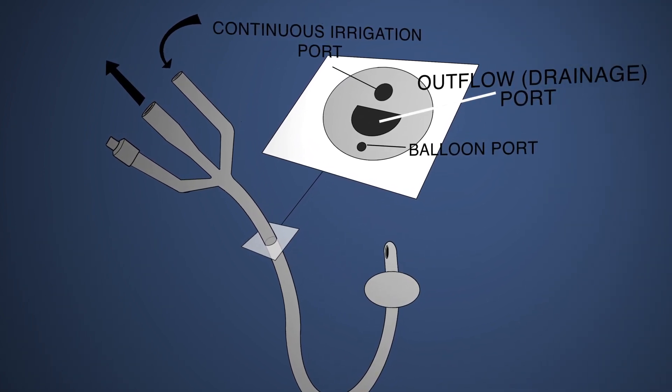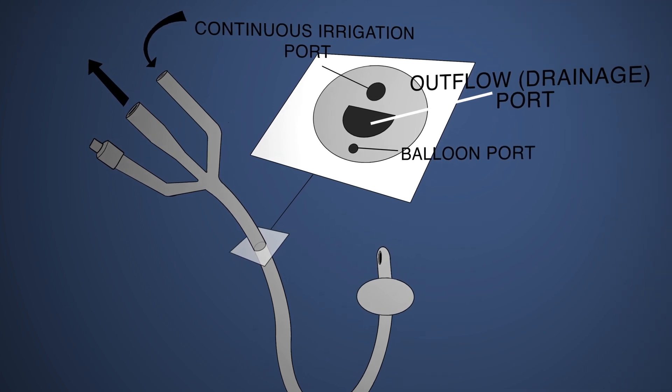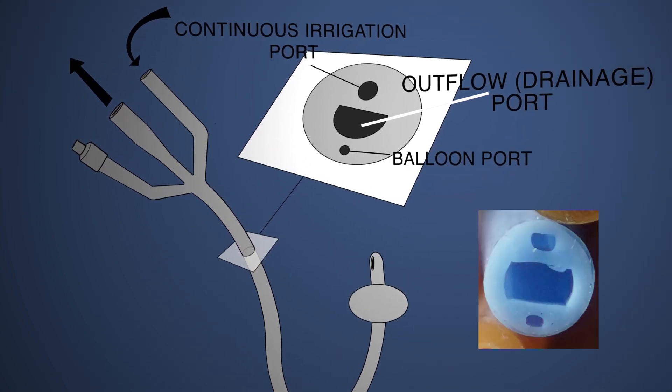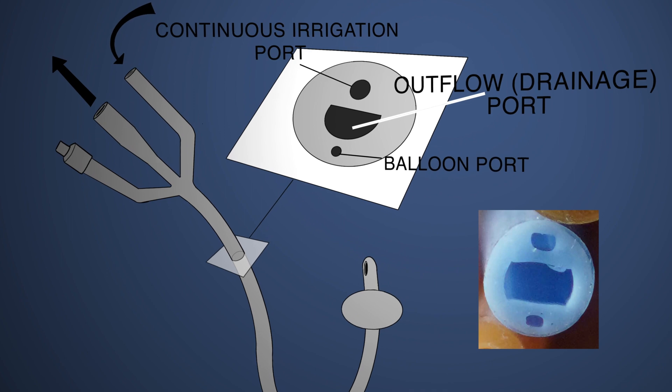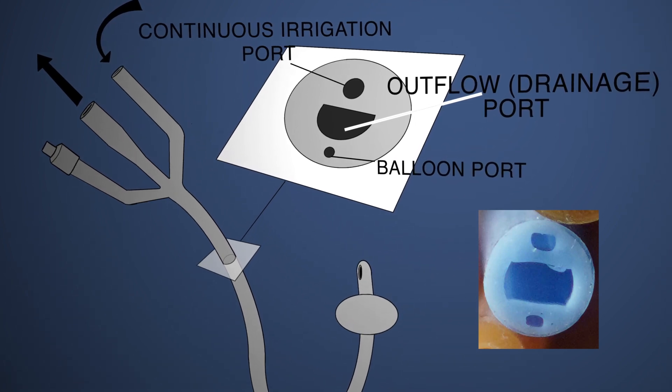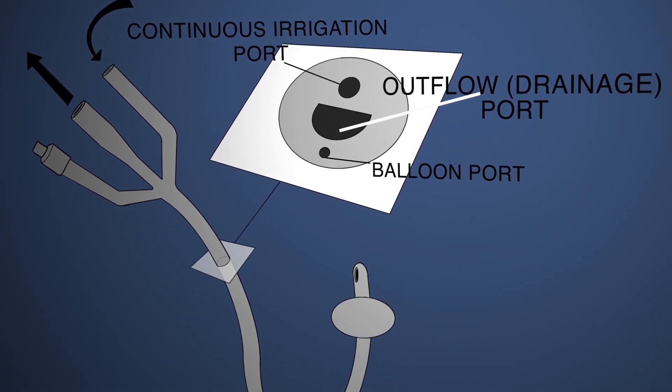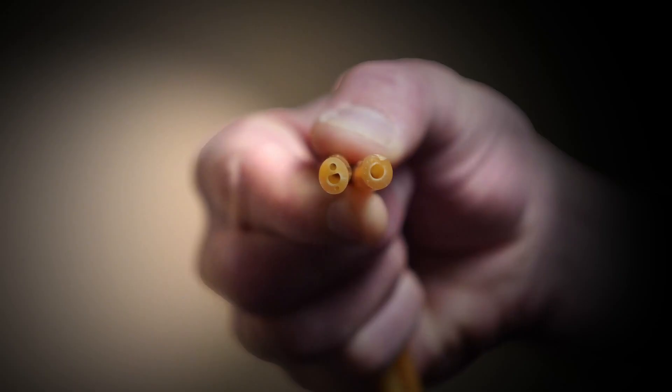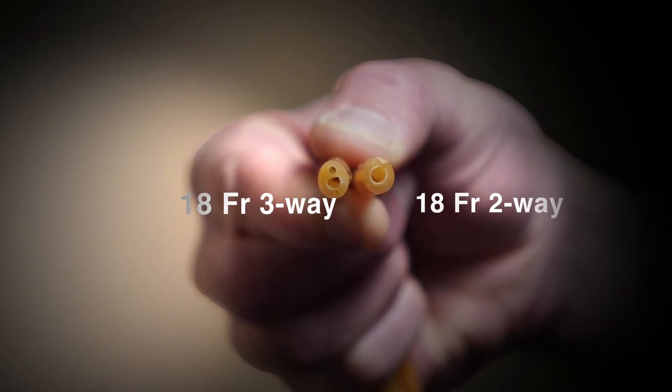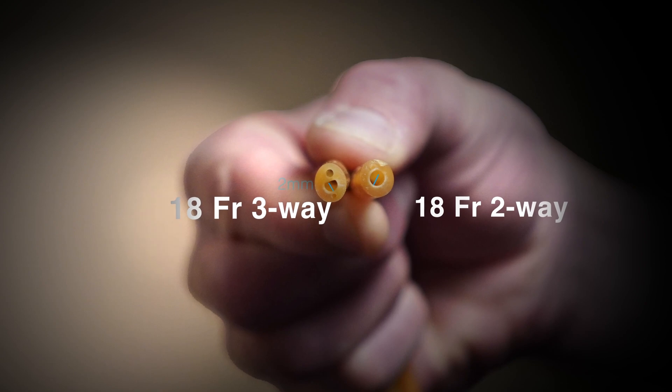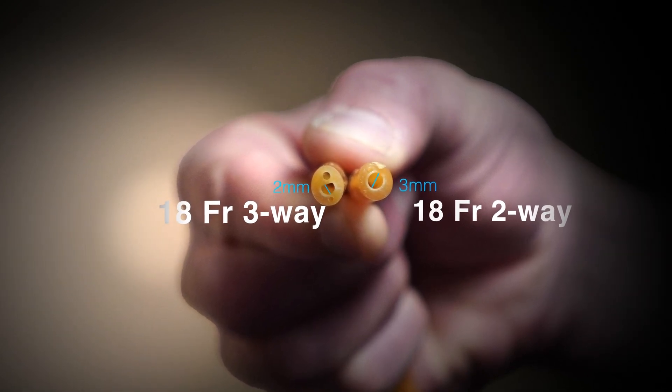This additional irrigation port is designed to add fluid to the bladder with continuous irrigation when there is active bleeding present. The catheter itself and the irrigation does not actively stop the bleeding. Rather, the irrigation dilutes the bleeding when present so that clots do not form. This additional port decreases the channel size of the catheter because this is an additional channel going through the same tube.